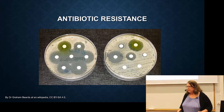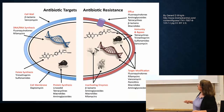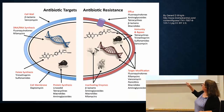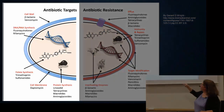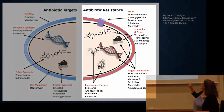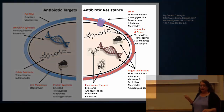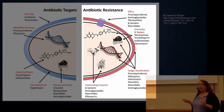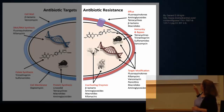As far as mechanisms of antibiotic resistance, it can be complex. On the left side are shown all the targets for antibiotics that I've already described. On the right side are the antibiotic resistance mechanisms, and there are four of them: efflux, immunity and bypass, target modification, and inactivating enzymes.